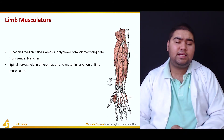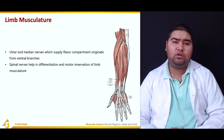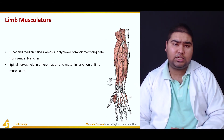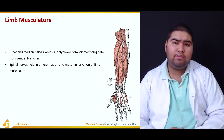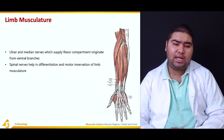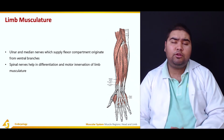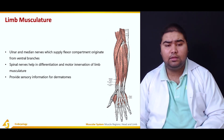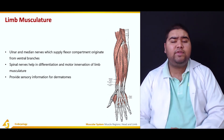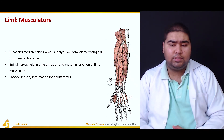Spinal nerves help in the differentiation and motor innervation of the limb musculature, helping to control the activities of the limb. They also provide sensory information for the dermatomes.